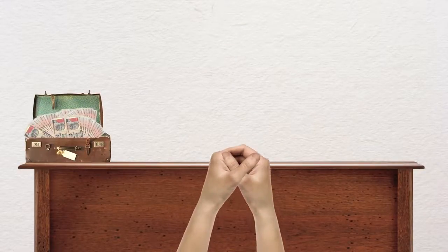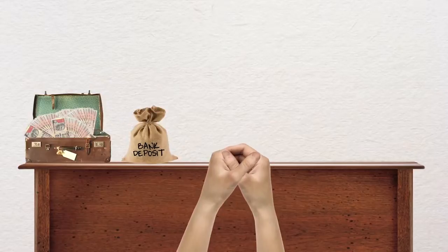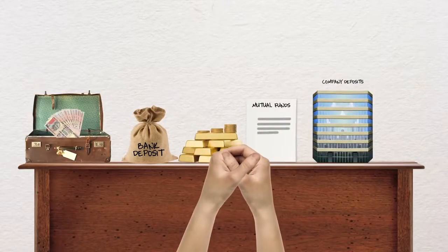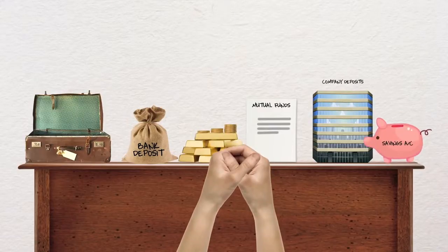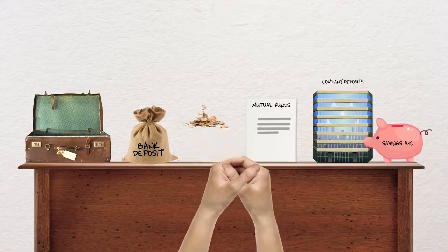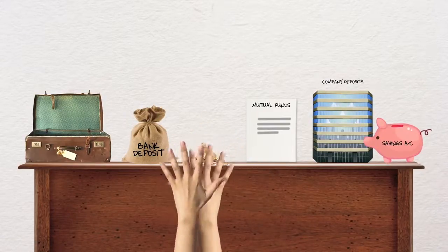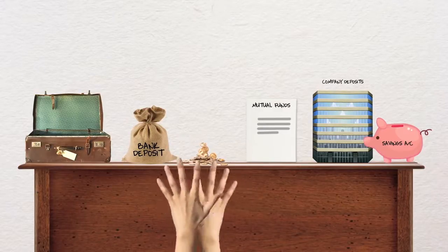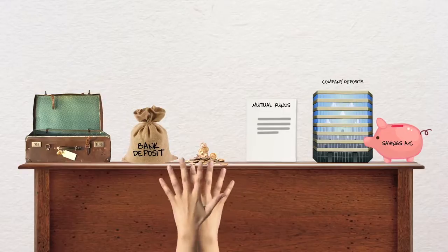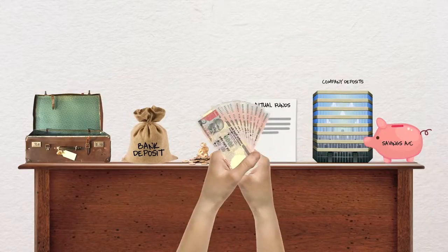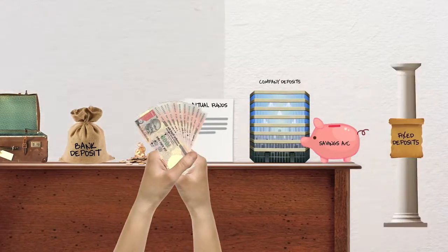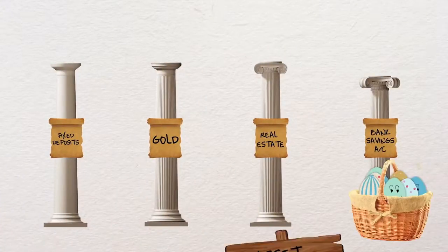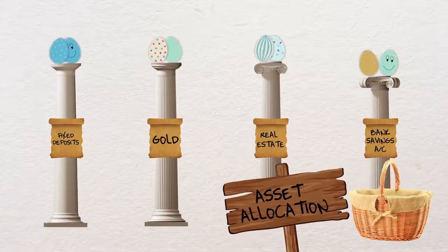On the other hand, consider this: you divide your investments more wisely in bank deposits, gold, mutual funds, company fixed deposits, and a savings bank account. Now in the event of gold prices falling, the downside is restricted to a smaller investment amount. And for any sudden money requirements, you have a savings account that is easily accessible. Yeah, it's that simple.